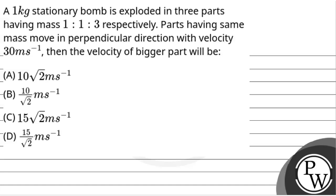Hello! Let's read the question. The question says that a 1 kg stationary bomb is exploded in 3 parts having mass ratio 1:1:3 respectively. Parts having the same mass move in perpendicular directions with velocity 30 meters per second. Then the velocity of the bigger part will be?